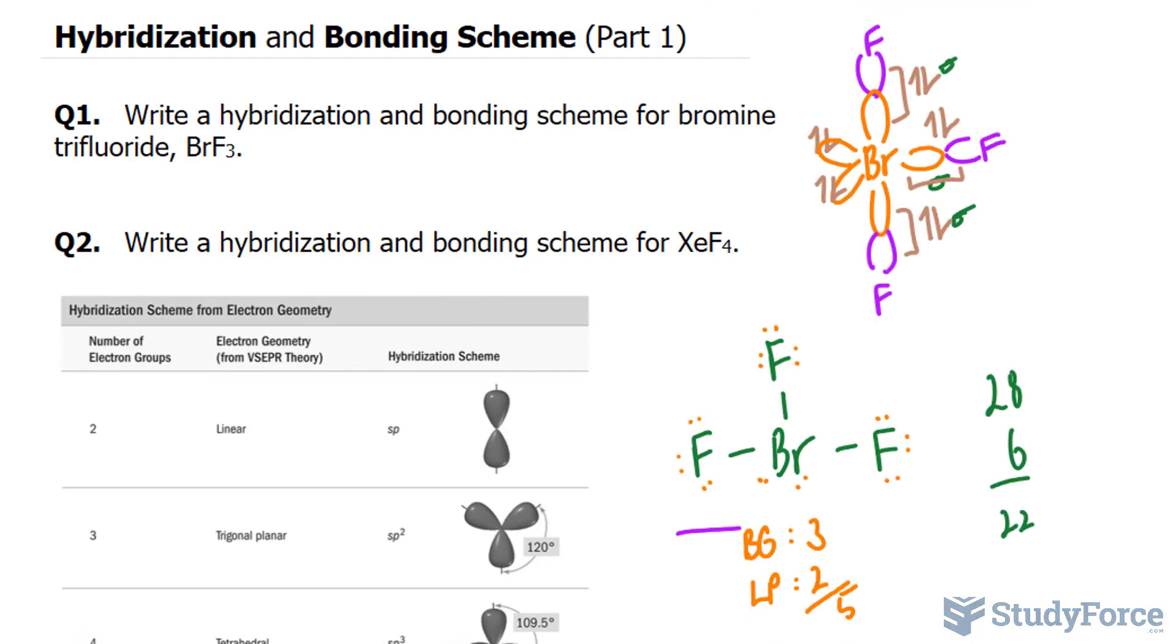So just to be clear, xenon uses six sp3d2 hybrid atomic orbitals to bond the four fluorine atoms and to hold the two lone pairs. And there you have it. Two examples on how to write the hybridization and bonding scheme of molecules.